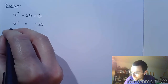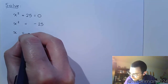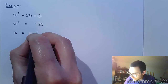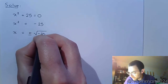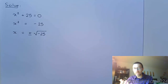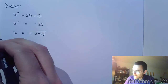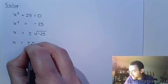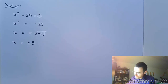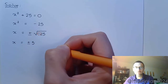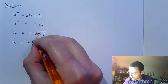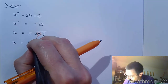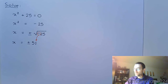The direct application of the square root property says X is equal to plus or minus the square root of negative 25. From here we simplify: the square root of 25 is just 5, but don't forget the negative inside the square root — a negative inside the square root simplifies outside as i, the imaginary unit. So X equals plus or minus 5i.